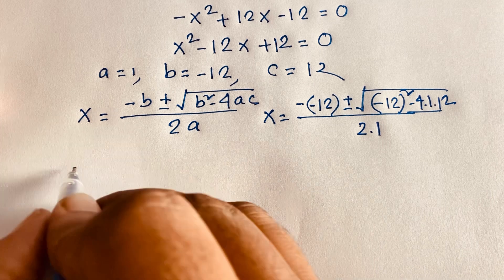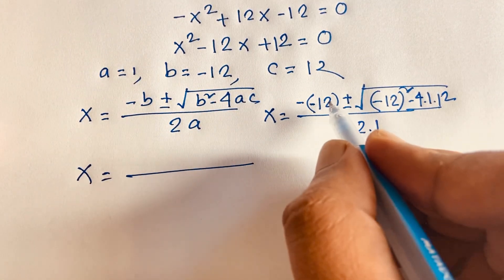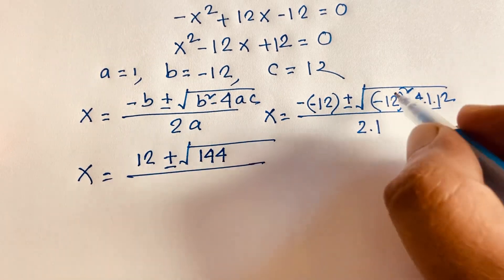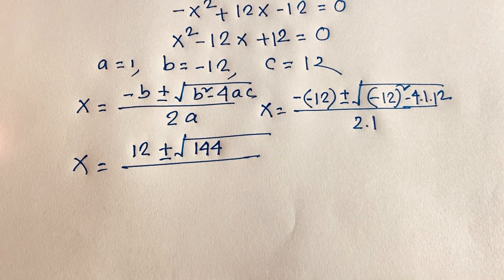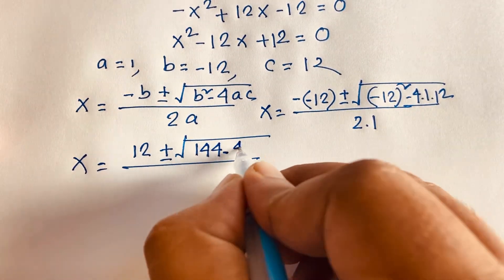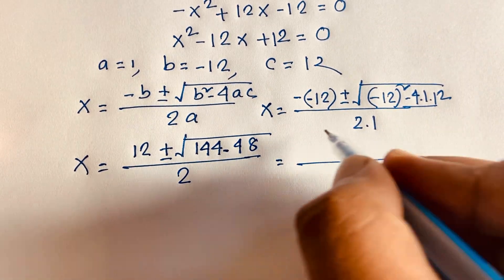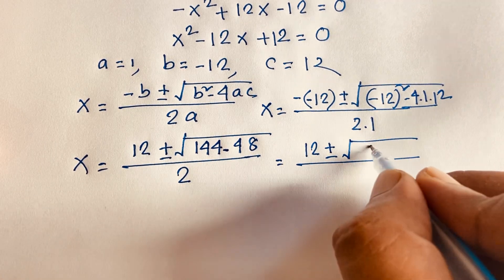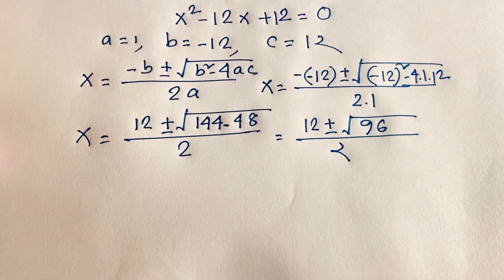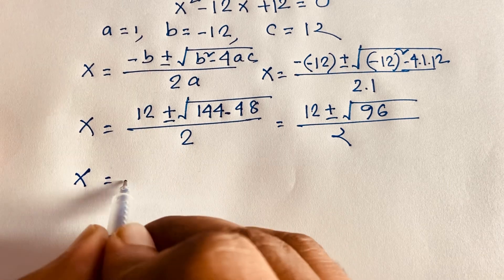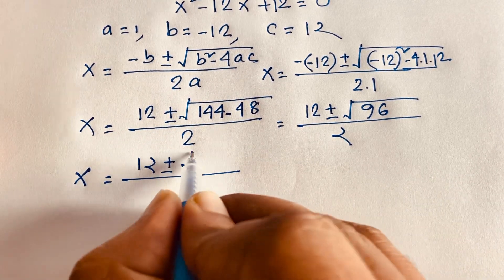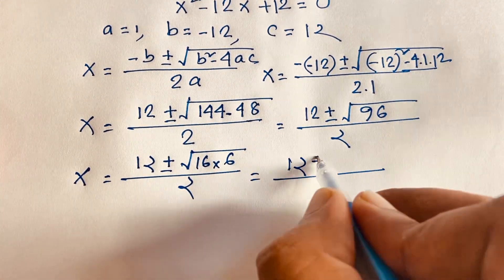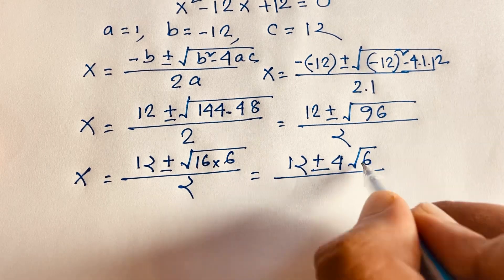Substituting: x equals positive 12 plus or minus square root of 12 squared — which is 144 — minus 4 times 1 times 12 — which is 48 — all over 2 times 1, which is 2. So we get 12 plus or minus square root of (144 minus 48), which is the square root of 96, over 2. Since 96 equals 16 times 6, we can write square root of 96 as 4 root 6.